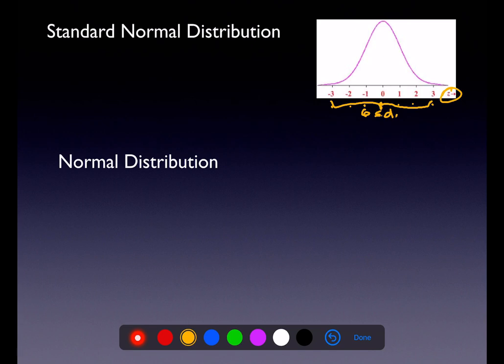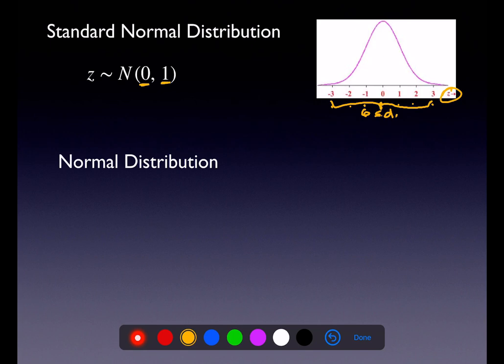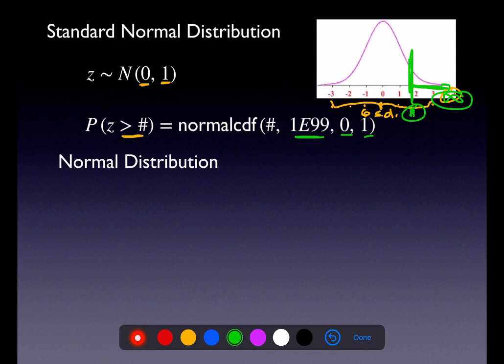With z-scores, zero is always under the peak, and one is always the standard deviation. If I wanted to calculate a probability — say, greater than some number — my low is that number and my high is infinity, which we write in our calculator as 1E99. The mean and standard deviation for z-scores is always 0 and 1.